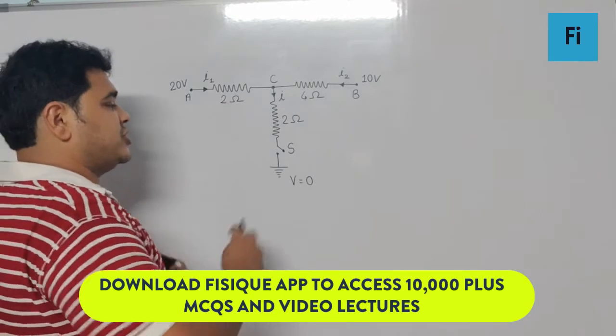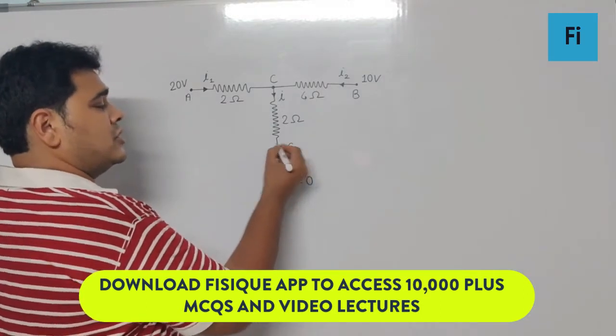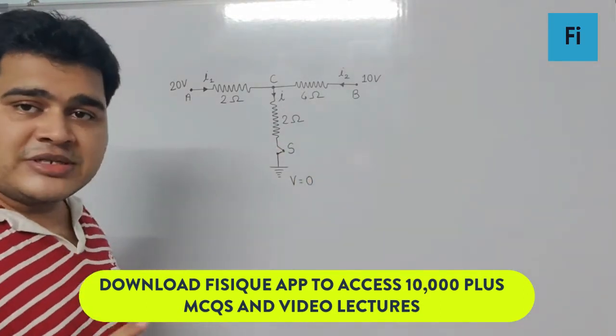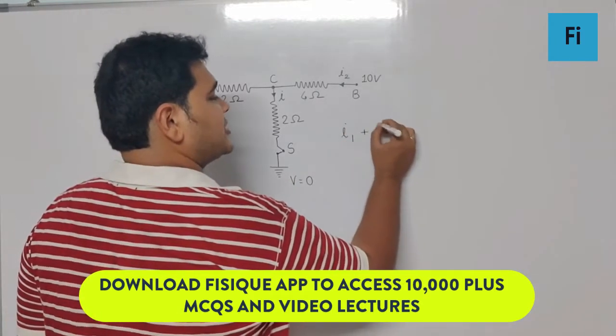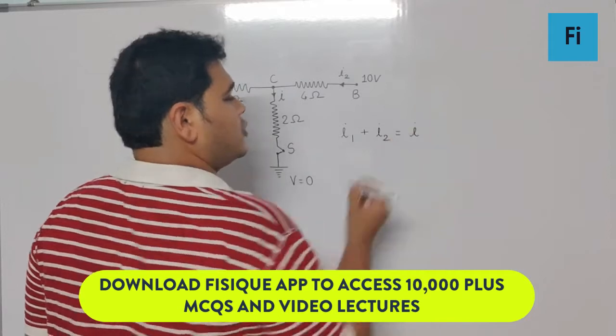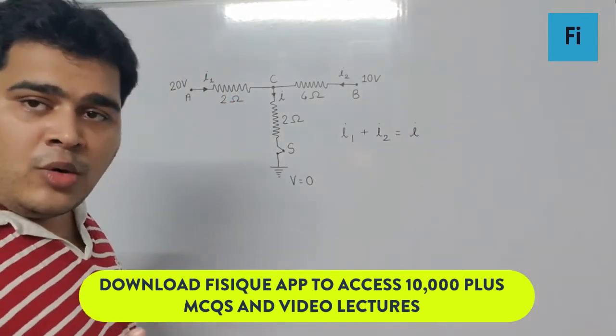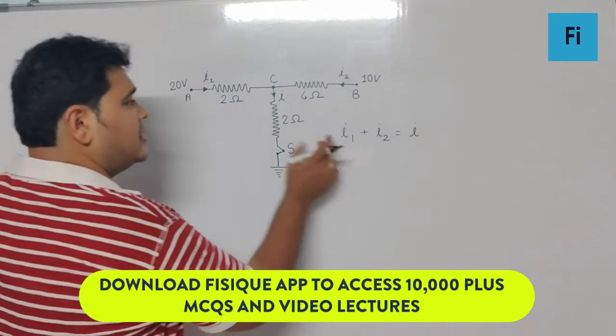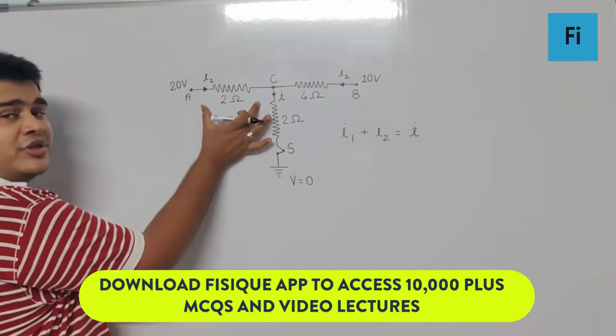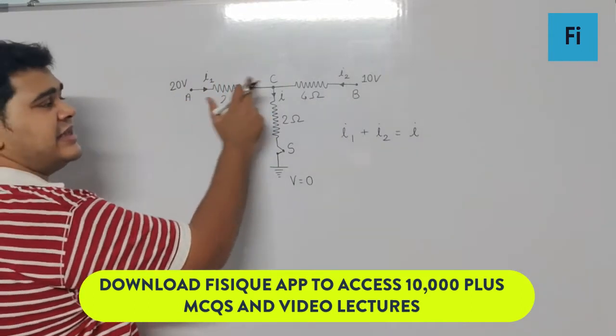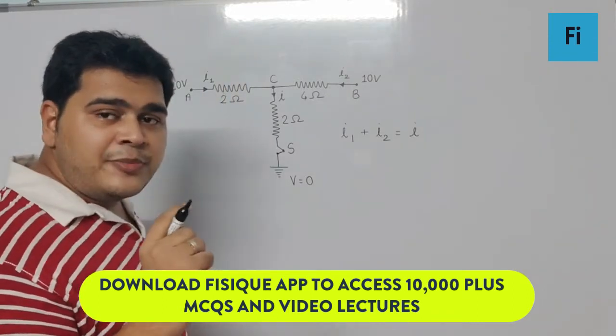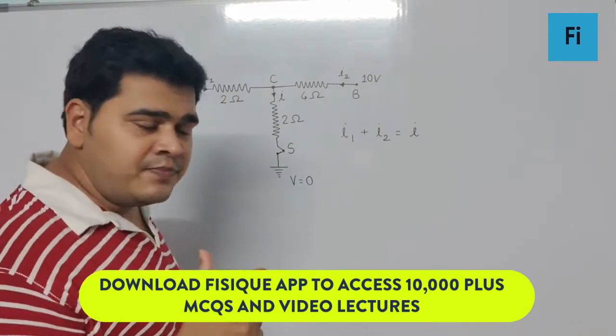Now if the switch is closed, can I say i1 plus i2 is equal to i? Can I say i1 is the current flowing up to the 2 ohm resistance having a potential at point A and C something different, which means there is a potential difference between A and C. So can I write i1 as V at A minus V at C upon R between AC?